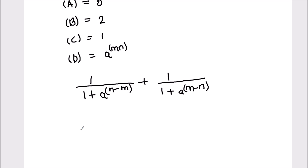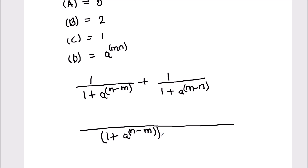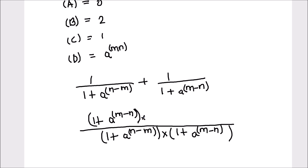Our first step will be to take the LCM. So LCM will be the multiplication of both the denominators — that's going to be (1 plus a raised to power n minus m) times (1 plus a raised to power m minus n). This is the LCM. When we divide this LCM by the denominator of the first fraction, we get (1 plus a raised to power m minus n), and since the numerator is 1 we multiply by 1. For the second fraction, we get the denominator (1 plus a raised to power n minus m), and since the numerator is 1 we multiply by 1.